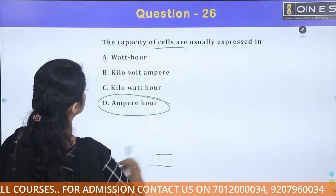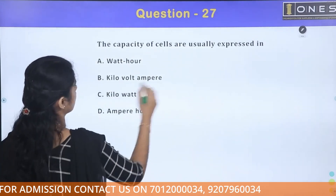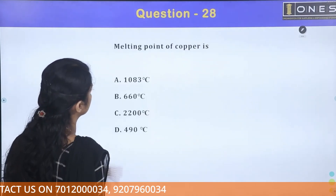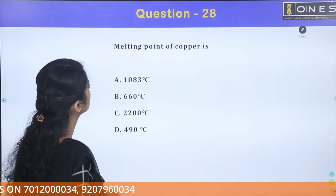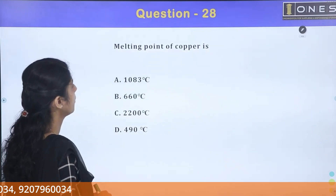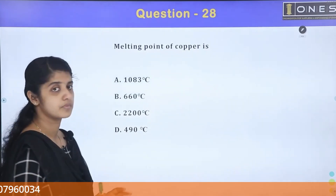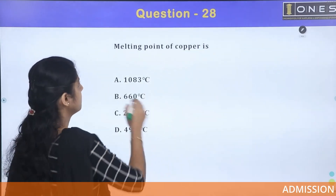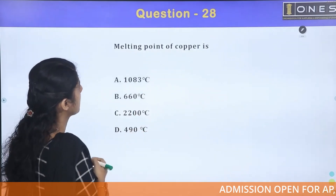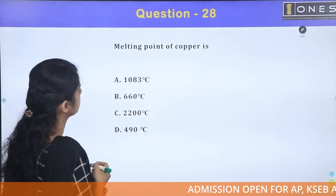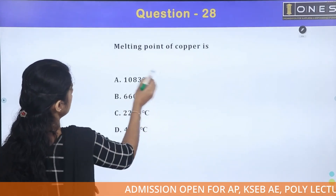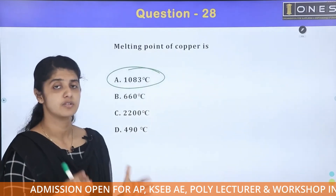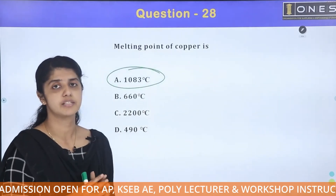The capacity of cells is usually expressed in ampere hours. Next, the melting point of copper — the melting point of copper is 1083 degrees Celsius.